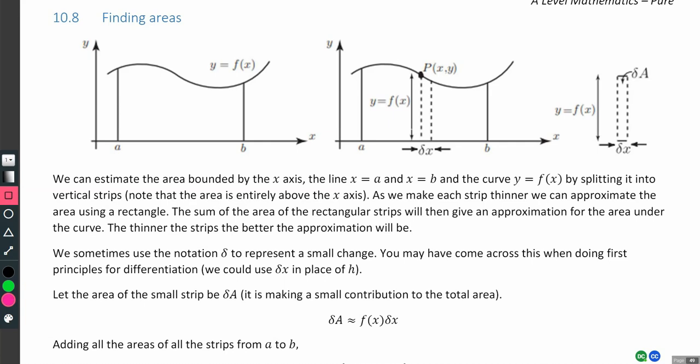Integration section 10.8, Finding Areas. We can estimate the area bounded by the x-axis, the line x equals a and x equals b, and the curve y equals f of x, by splitting it into vertical strips.